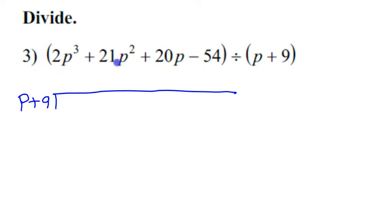You should always check and see if there are any missing terms so that you would need a 0. Are there any terms missing here? No. 3, 2, 1, none. Everything's here, but always watch out for that. So I have 2P to the third power plus 21P squared plus 20P minus 54.